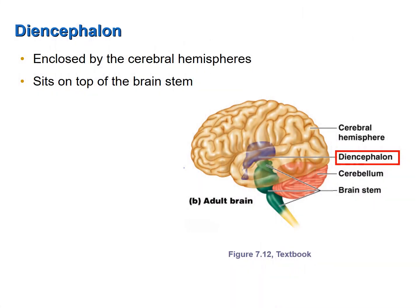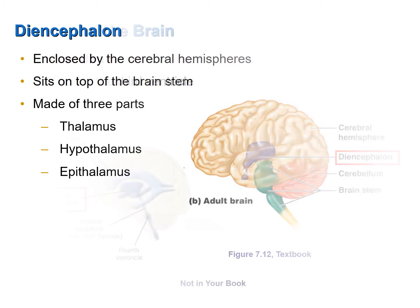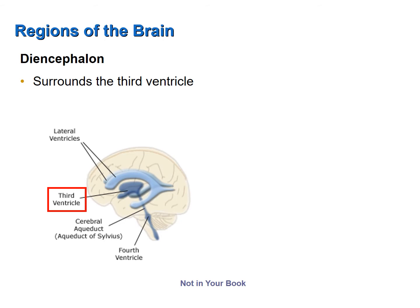The diencephalon is a region of the brain that is deep and completely surrounded by the cerebrum. It sits on top of the brain stem, which is shown in green; the diencephalon itself is shown in purple. It is composed of three parts: the thalamus, the hypothalamus, and the epithalamus. I always tell students: when you think of the diencephalon, think of thalamus, thalamus, and more thalamus.